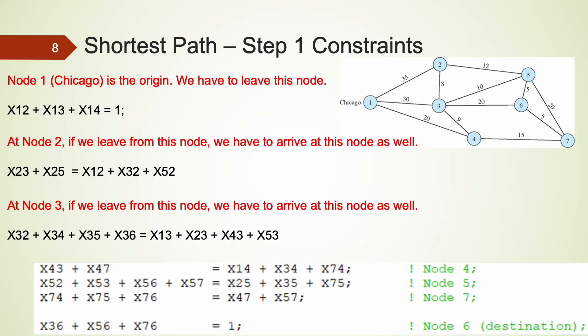Let's take a look at the constraints here. At node 1, Chicago, we have to leave this node. There are three line segments that leave from Chicago: 1,2, 1,3, and 1,4. To leave Chicago, we have to make sure that one of x1,2, x1,3, and x1,4 should be 1. Using the conditional constraints we learned earlier, that would be the sum of x1,2, x1,3, and x1,4 to be 1.